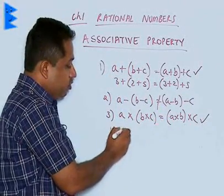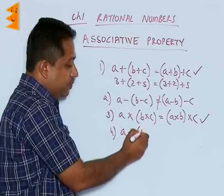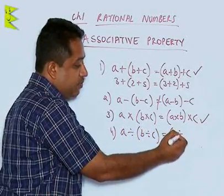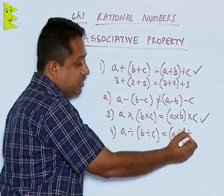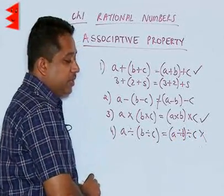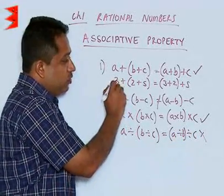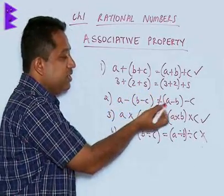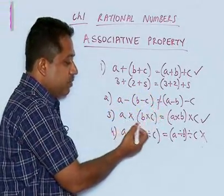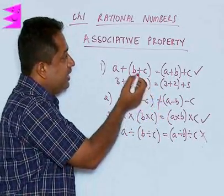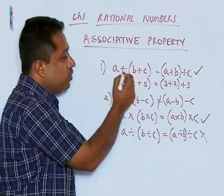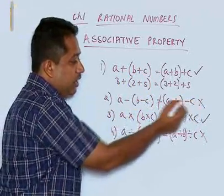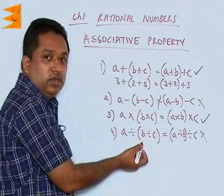And if you look at division: is A divided by (B divided by C) equal to (A divided by B) divided by C? The answer is it will not be. So, you can check like this — as done here for addition, you can try for subtraction, multiplication, and division. You will find that the associative property is true only in case of addition and multiplication. It will not be true in case of subtraction or division.